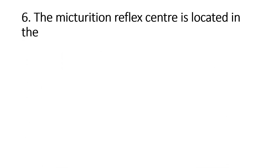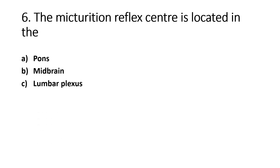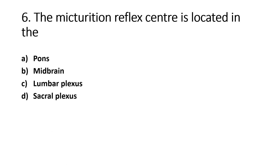The Micturition Reflex Center is located in the: Option A - Pons, Option B - Midbrain, Option C - Lumbar Plexus, Option D - Sacral Plexus. The right answer is Option D, Sacral Plexus. The Micturition Reflex Center controls the urinary bladder.